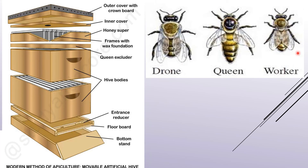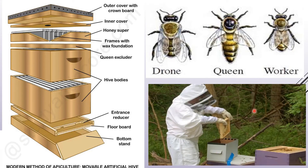Some worker bees are designated as soldiers. If any bee from another hive tries to enter, they will never be given permission; all this protection is taken care of by the soldier worker bees. When artificially rearing honey bees, the beekeeper must wear a complete protective uniform. Fumigation — producing lots of fumes — makes the bees conscious but does not kill them, allowing the beekeeper to easily remove honey and work accordingly.